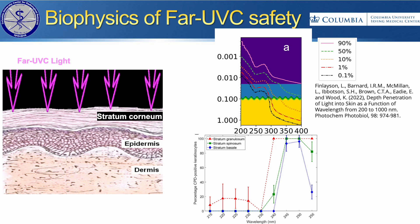We've done some in vitro studies. Dr. Brenner mentioned this in his earlier talk, where we used our monochromator to expose an in vitro artificial skin model to a single dose of 100 millijoules per centimeter squared, using wavelengths from 215 to 255 in a 2 nanometer full width half max.